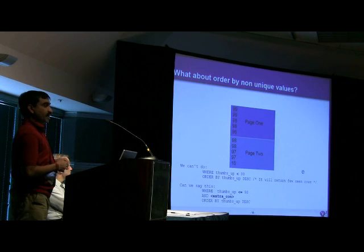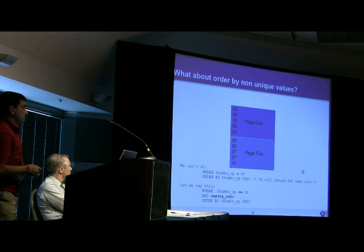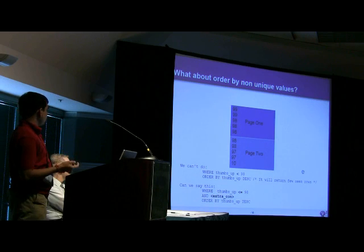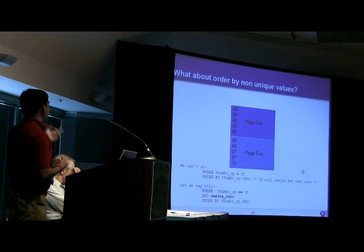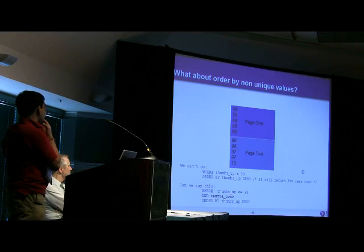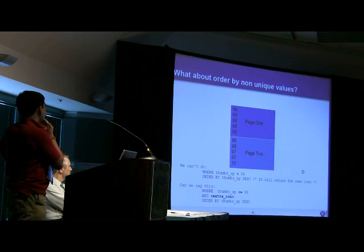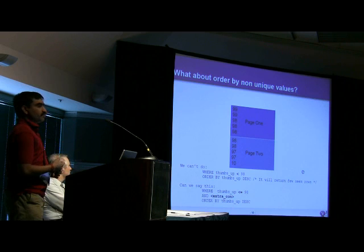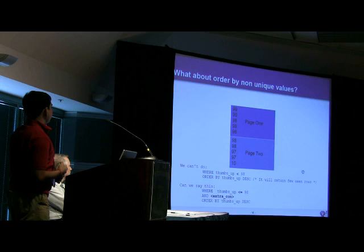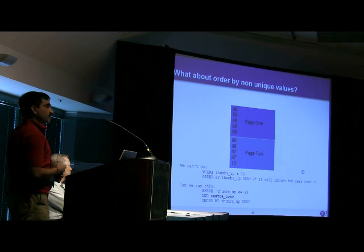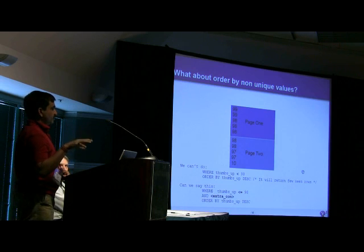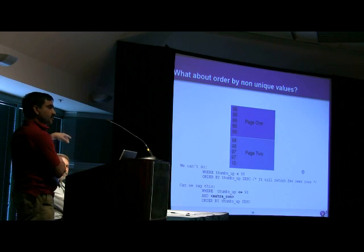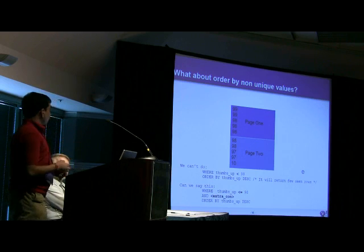Given solution was working for ID because ID was unique. What about ThumbsUp? ThumbsUp is not unique. Now we can't use that value as a pointer to find the next page. Here I have three times that a ThumbsUp value has repeated three times: 98, 98, 98 on page one. And two values are there on page two as well. So I can't say ThumbsUp is less than 98. It is going to give me fewer number of rows. And so can we say ThumbsUp less than or equal to 98? It is going to give me a few extra rows. So we need one additional clause, an additional AND condition, to filter out these extra rows. Can we do it?